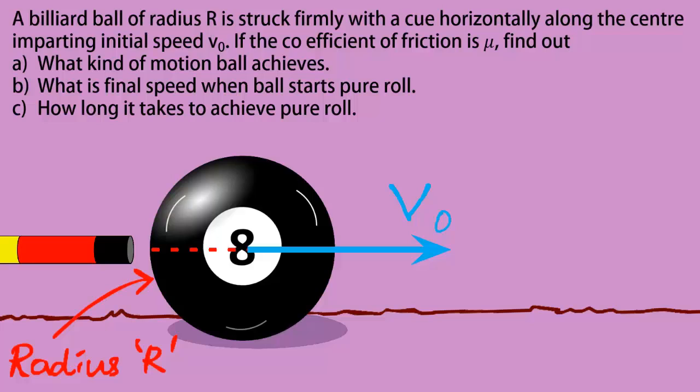I will begin with the first one. The cue imparts an initial speed v0. But does it impart a spin? To impart a spin, we need a torque relative to the center. And since the force is directed along the center, the cue doesn't produce any torque. So the initial spin is zero.